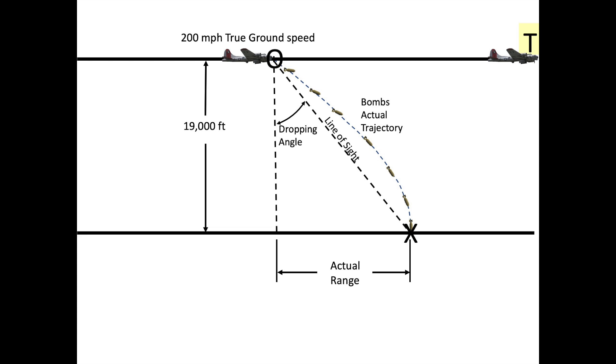When the bomb makes ground contact, the plane will be in position T. As we have shown, the bomb's horizontal speed slowed down from 200 miles per hour at bomb release to 142 miles per hour at impact.